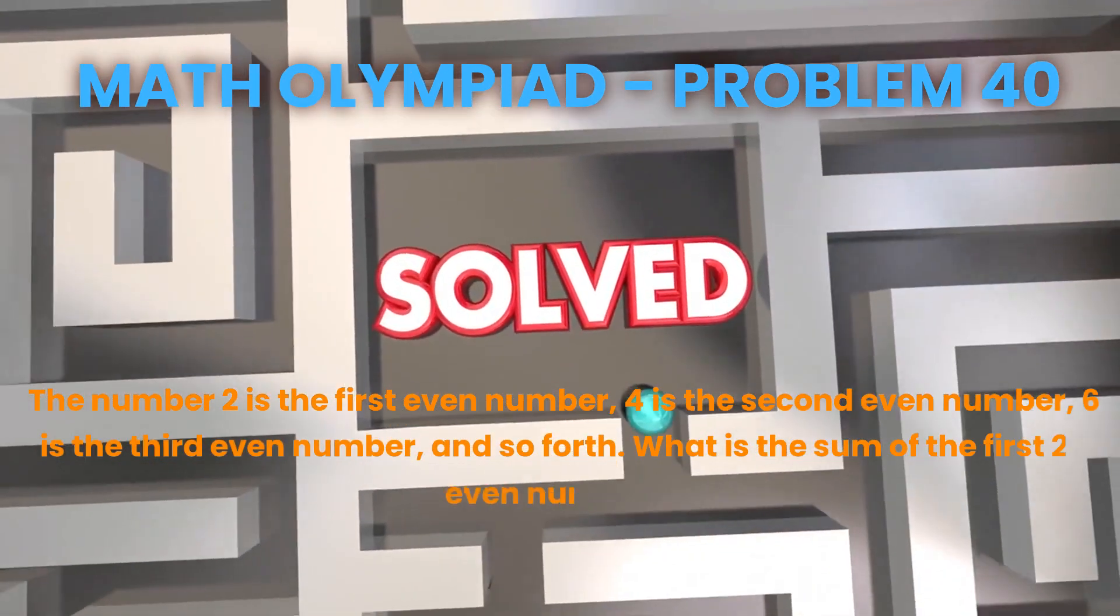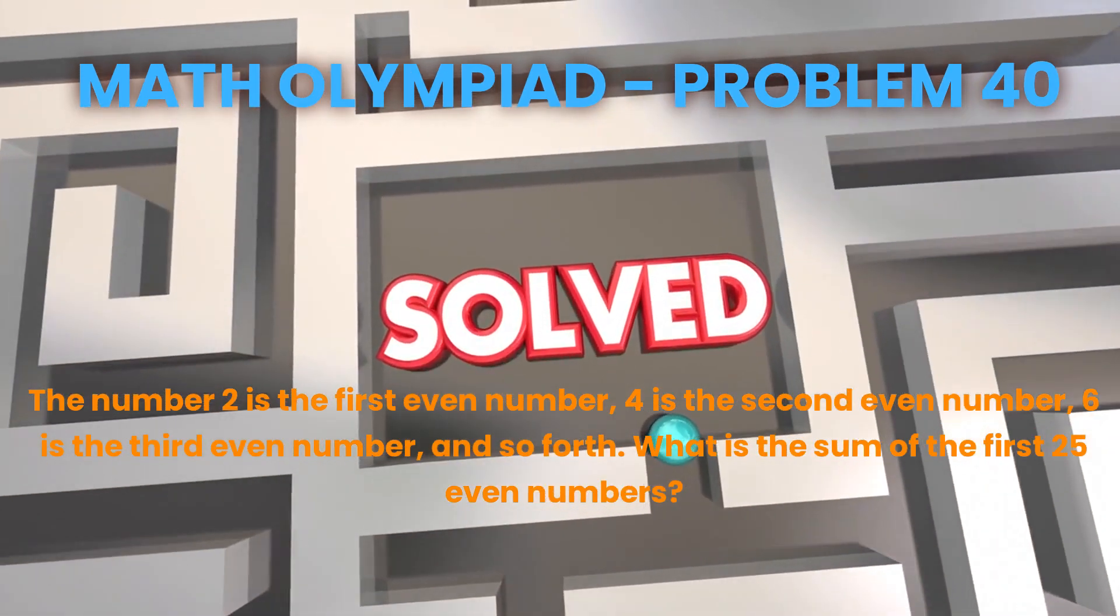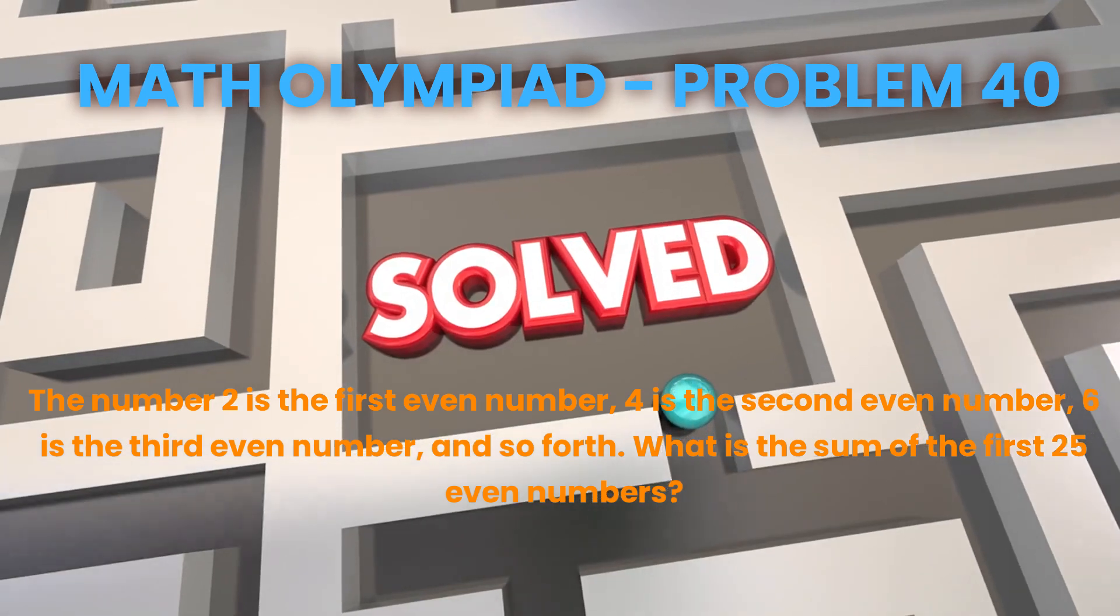The number 2 is the first even number, 4 is the second even number, 6 is the third even number, and so forth. What is the sum of the first 25 even numbers?